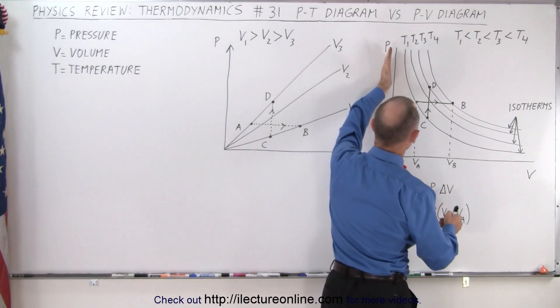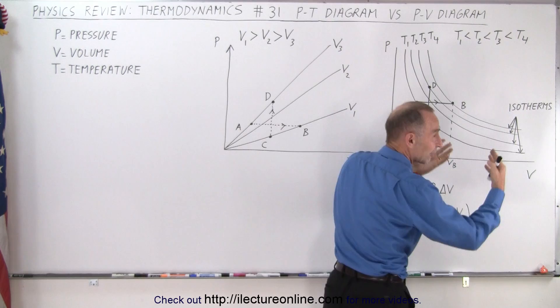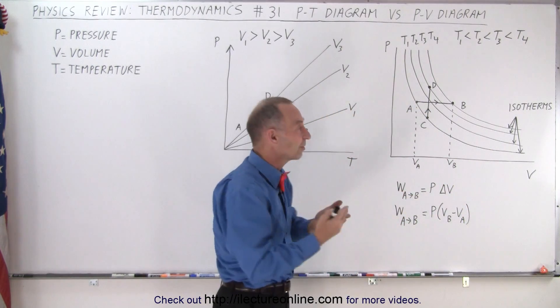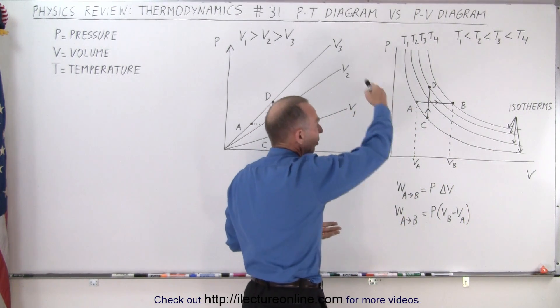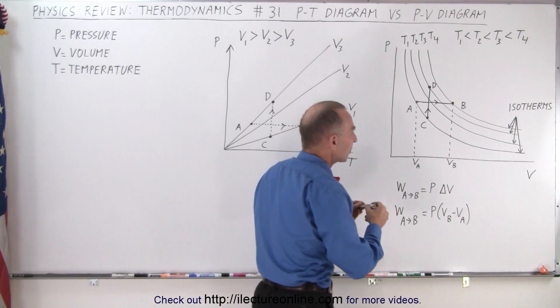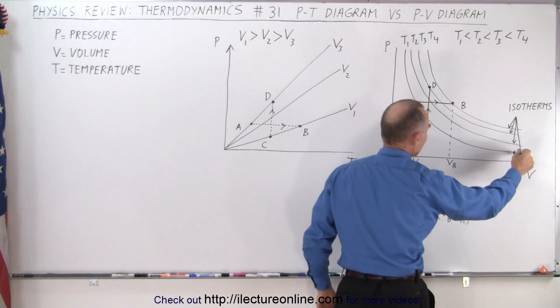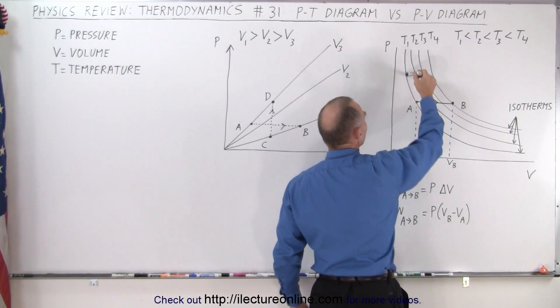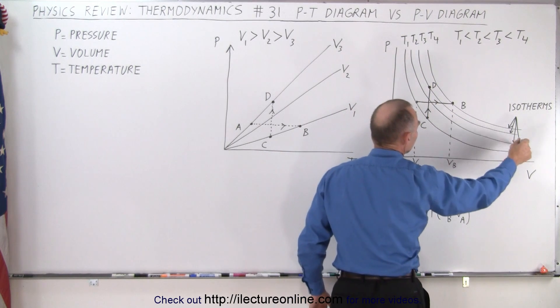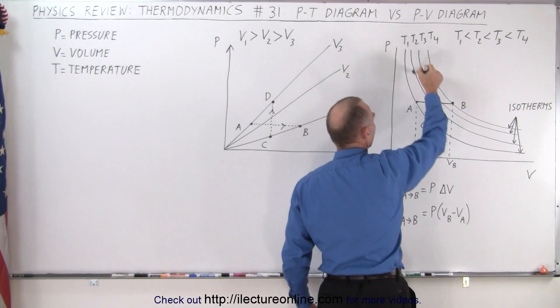Notice that this axis only shows the pressure and the volume. So the third variable, temperature, can only be represented by what we call isotherms—lines that represent the same temperature. So inside a PV diagram, if we stay on this line, the temperature will remain constant.